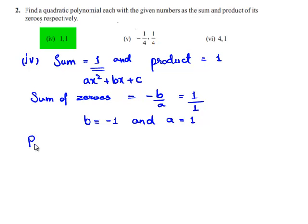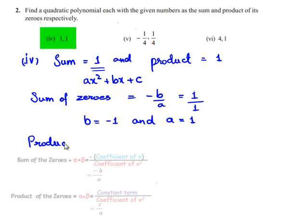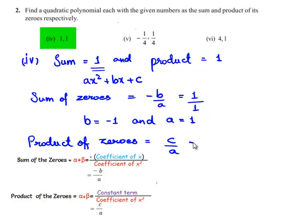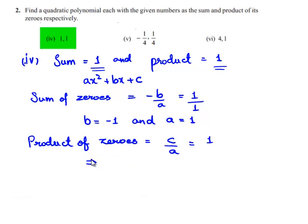We also know that the product of the zeros is equal to C/A. The given product is 1. So this can be written as C = A by cross multiplication. We also found the value of A to be 1. Therefore, C is equal to 1.